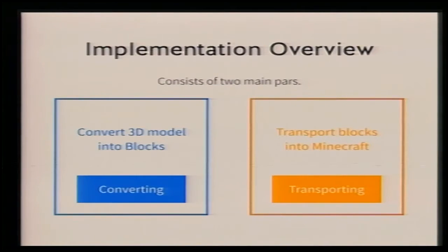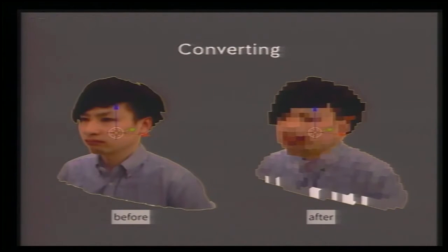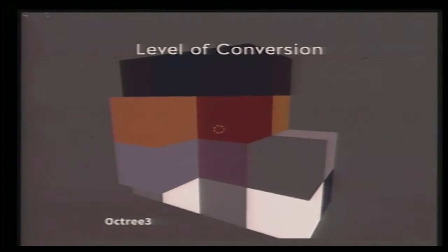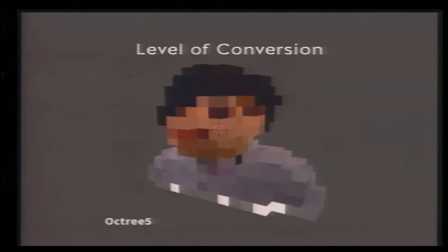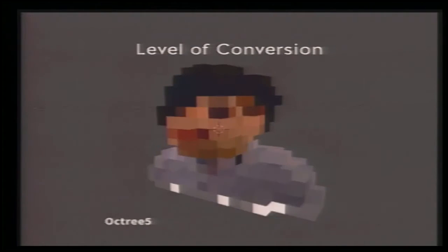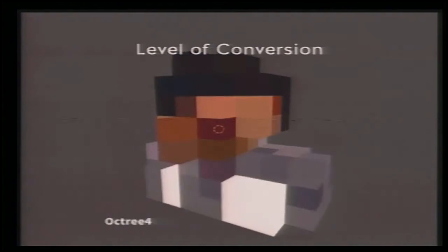This software consists of two main parts. The first part is converting the 3D model into blocks. The left side shows the original model and the right side shows the converted model. There is a level parameter for conversion, so you can see the shape change across levels — 3, 5, 6, 7, 8 — compared to the origin.